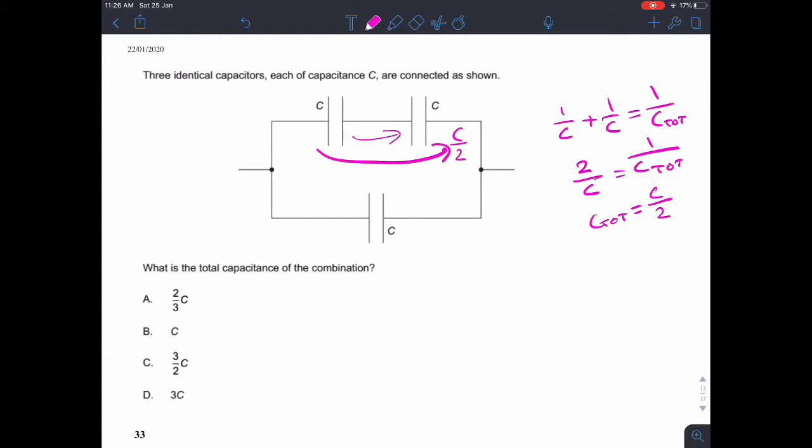And then we've got them in parallel. So if we just add C over 2 to C, so C over 2 plus C equals 3 over 2 C. So the answer must be C.